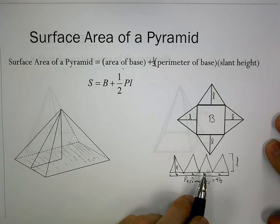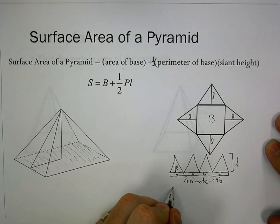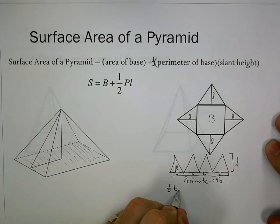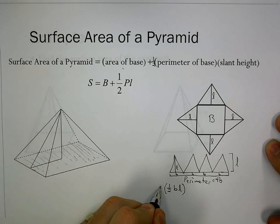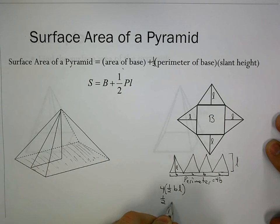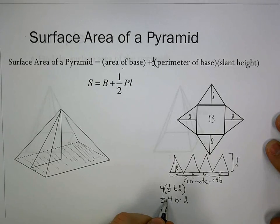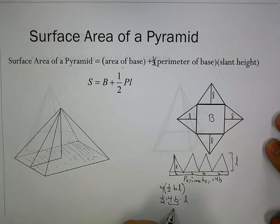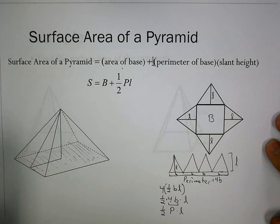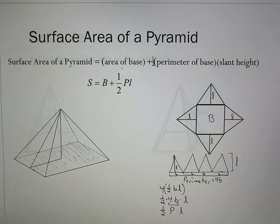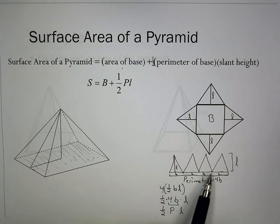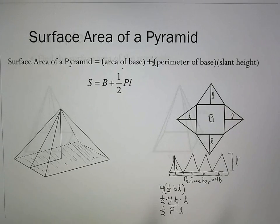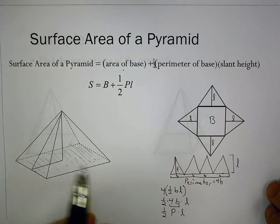The area of one triangle is one half base times slant height. With four triangles, that becomes one half times 4B times L, which equals one half times perimeter times L. This tells us how we get the total area of all the triangular faces. Make sure your slant height is the height of the triangles — the distance on the outside. We want L, not H.